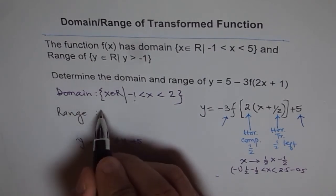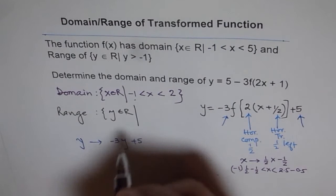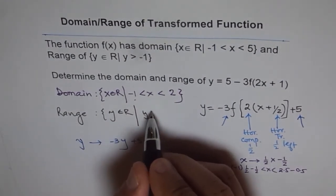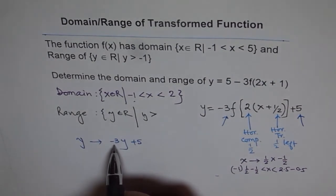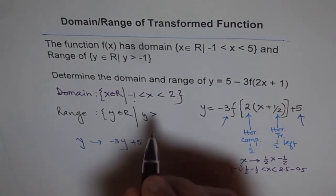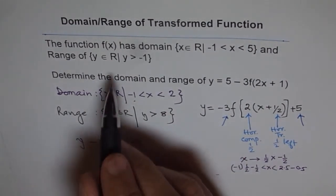So y value is, y belongs to real numbers. And y is greater than minus one. Minus one times minus three is plus three. Plus three plus five is eight. So that's what we get range. You understand how?